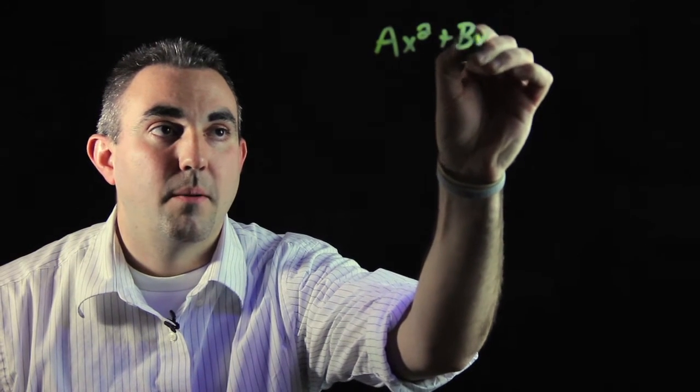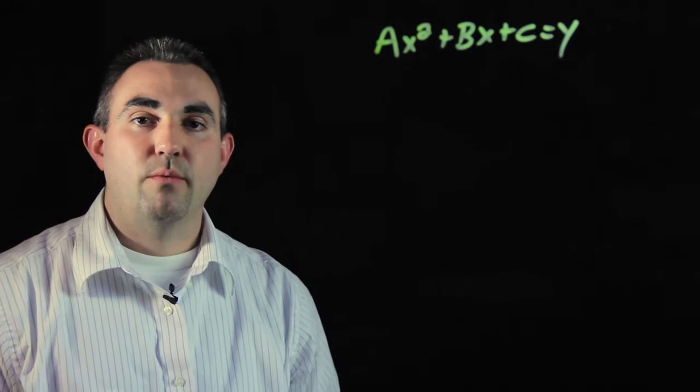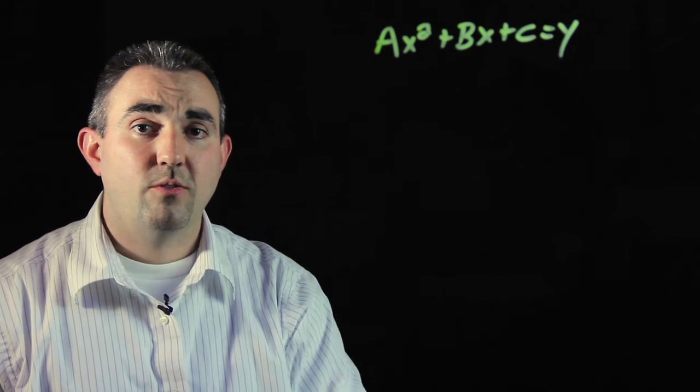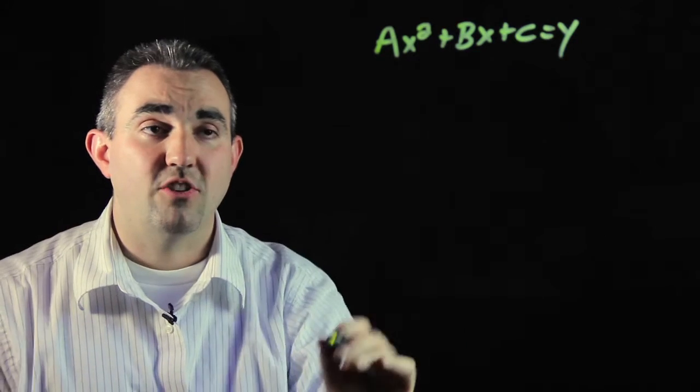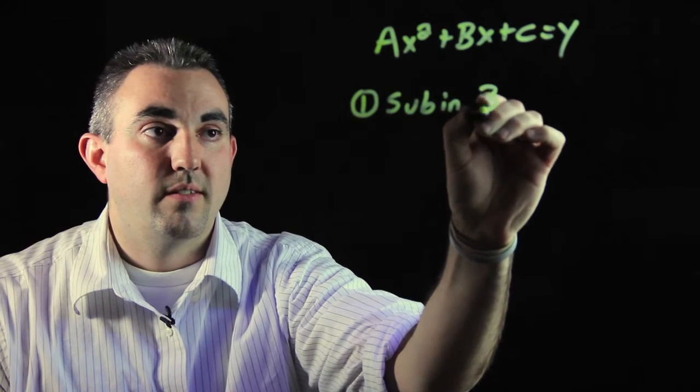The standard form of a quadratic equation is ax squared plus bx plus c equals y. Now you're going to be given three points and your first job is to substitute each one of those points individually into this equation. So step one is to sub in three points.